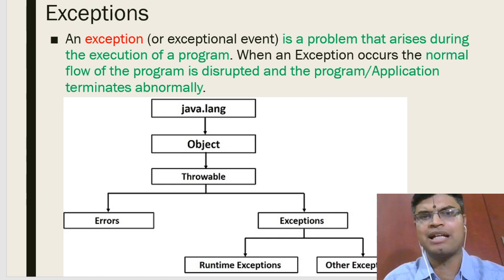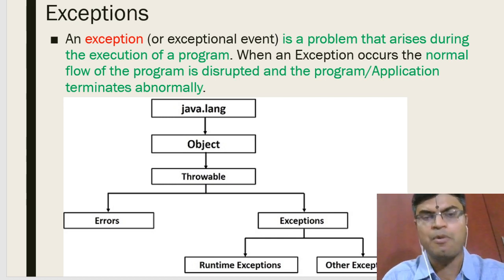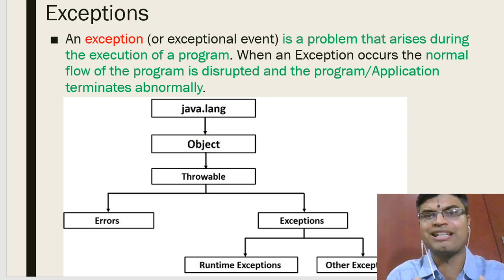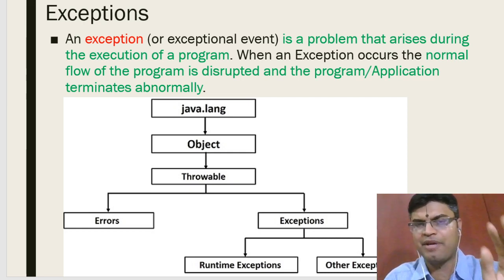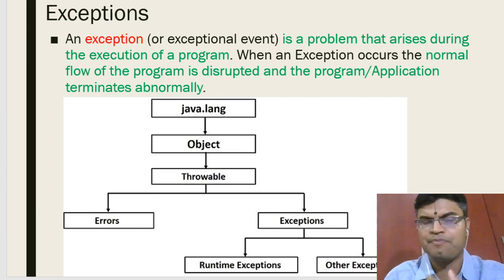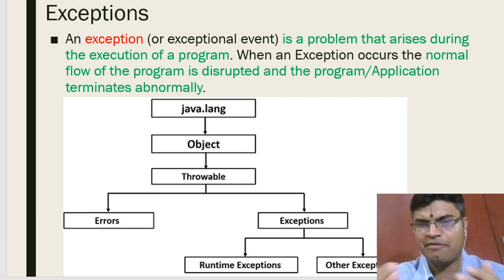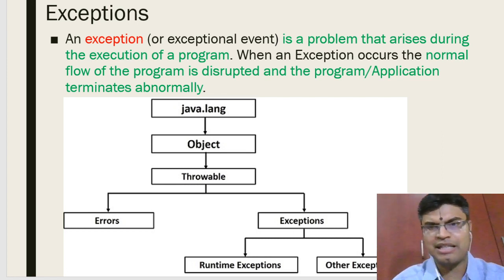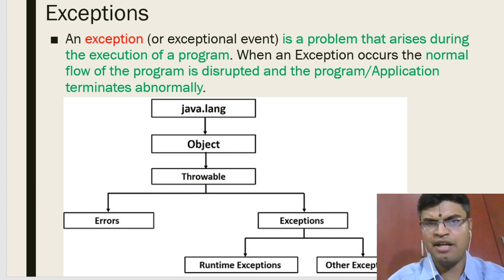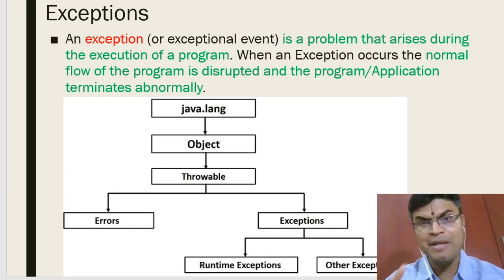Exceptions come under the java.lang package. There is a class called Object, under which we have a class called Throwable, and under Throwable we have two main categories: Exceptions and Errors. Under Exceptions you can have two types: runtime exceptions and compile time exceptions. While a program is executing, various exceptions may occur.